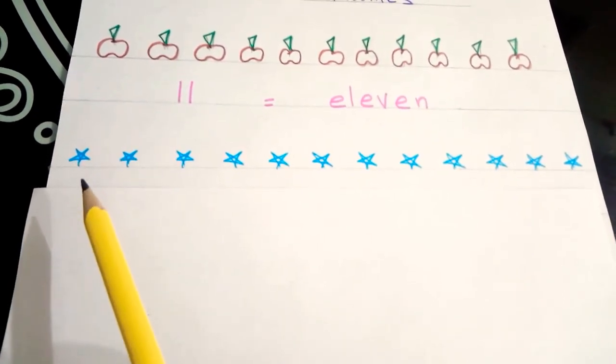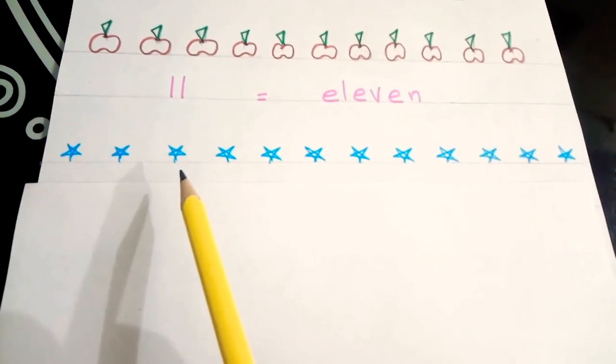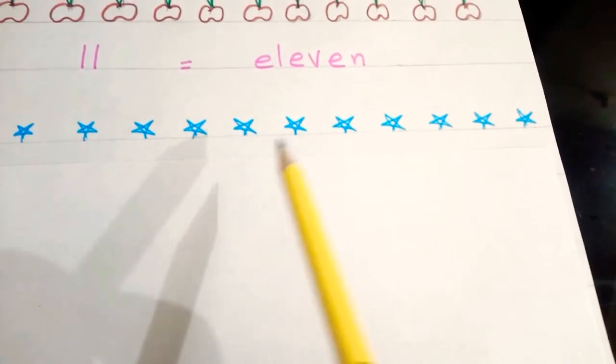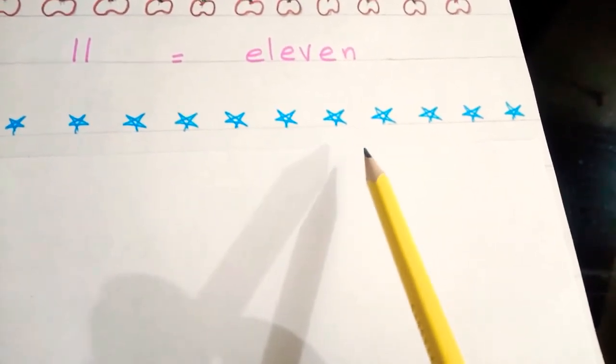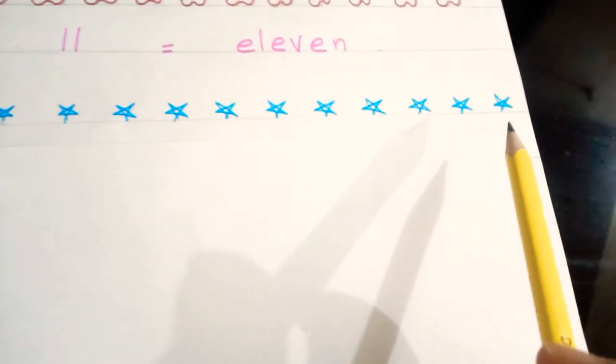So, let's start. Count these stars. 1, 2, 3, 4, 5, 6, 7, 8, 9, 10, 11, 12.